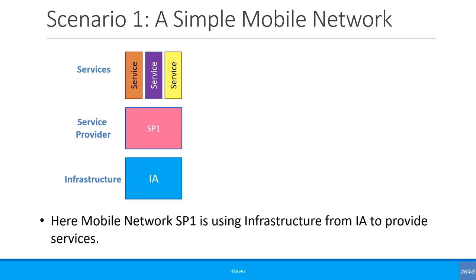Let's look at a simple scenario that probably applies to most mobile networks. The mobile network SP1 is using infrastructure from infrastructure provider IA to provide services. In this case, the infrastructure company could belong to the same company or it can be another company.